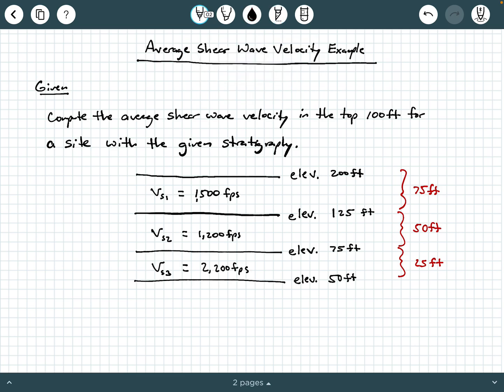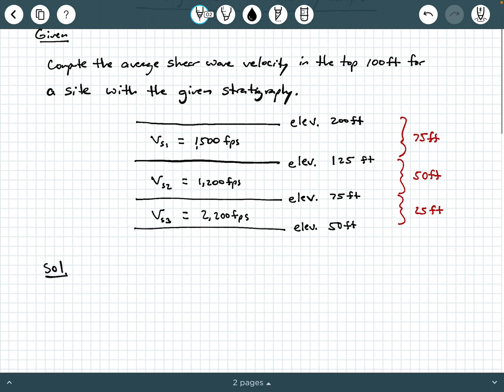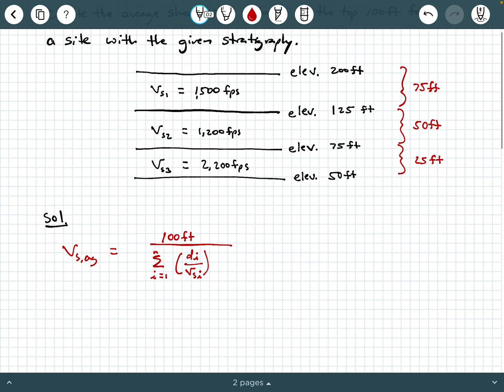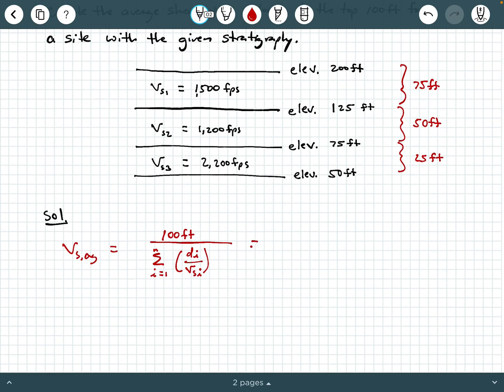So I'm going to go ahead and write solution here. And I'm going to say V sub S average is going to be equal to 100 feet divided by the summation as I goes from 1 to N of D sub I over V sub S sub I. And again, you got to be careful. We're just looking at the top 100 feet. So if we expand this,